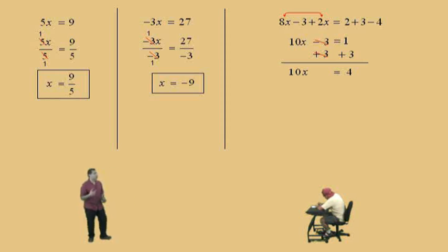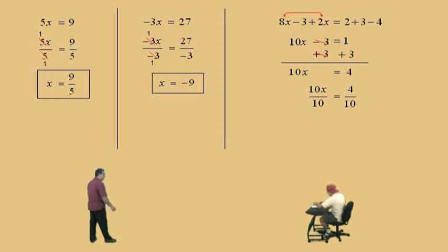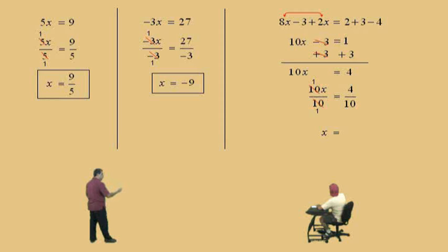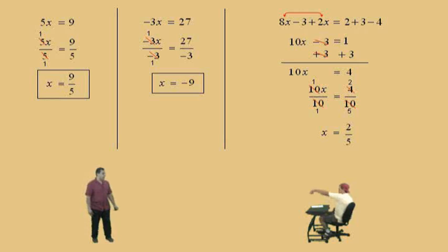Now, we're going to do what to both sides to get our 1x? Divide by 10. Divide both sides by 10, that's right. And 10 divided by 10 is 1, so we get 1x on the left-hand side. Now, 4 over 10 — both 4 and 10 are divisible by 2, so how does it reduce, Charlie? 2 over 5. Very nice. And so what's our final answer? 2 fifths. Very nice there, Charlie.